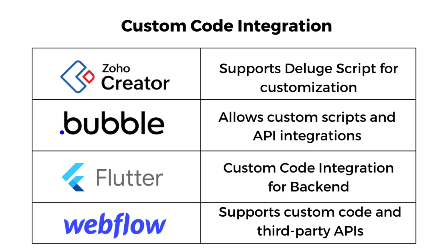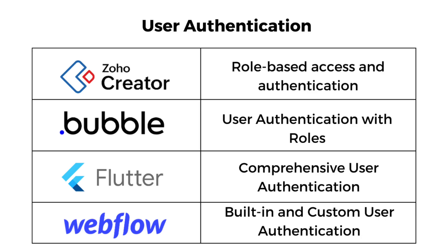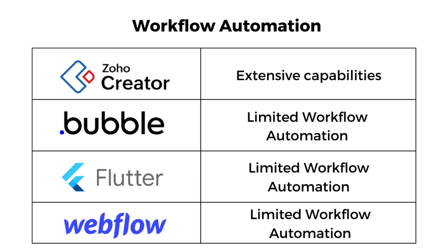For custom code integration: Zoho Creator supports Deluge scripts, Bubble allows custom scripts and API integrations, Flutter supports custom code integration for backend, and Webflow supports custom code and third-party APIs. For user authentication: Zoho Creator offers role-based access and authentication, Bubble offers user authentication with roles, Flutter offers comprehensive user authentication, and Webflow has built-in and custom user authentication. For workflow automation, only Zoho Creator offers extensive capabilities, while Bubble, Flutter, and Webflow have limited workflow automation.